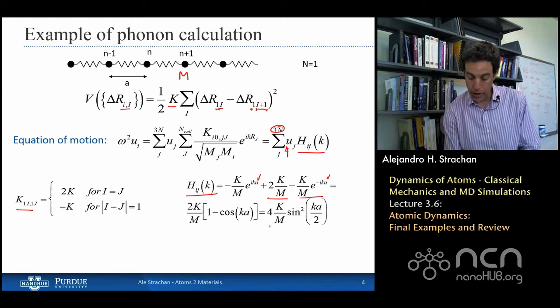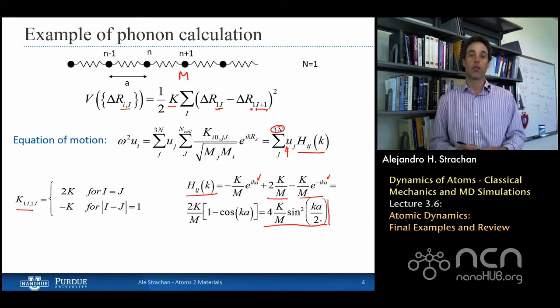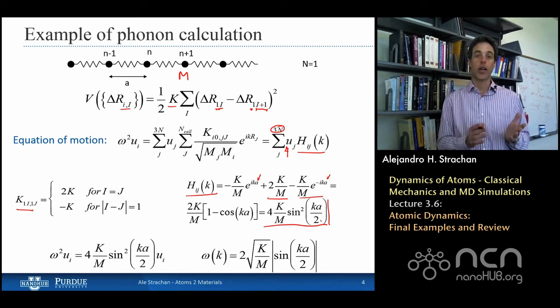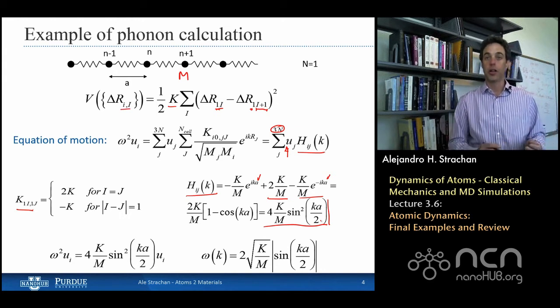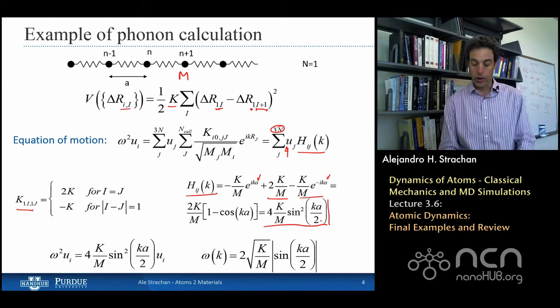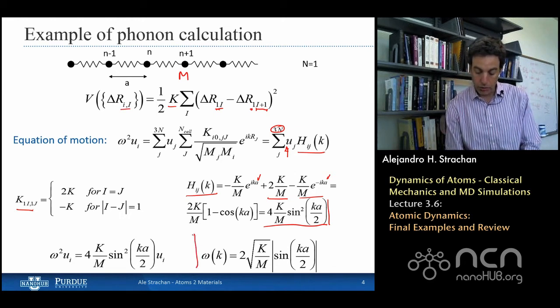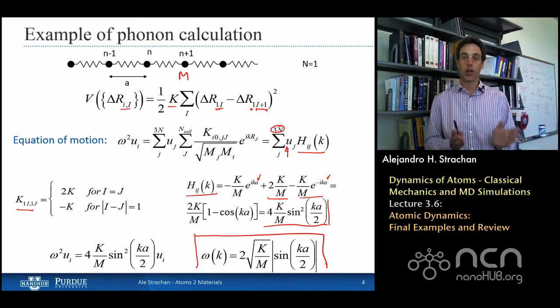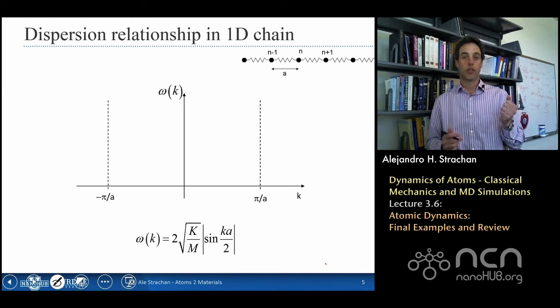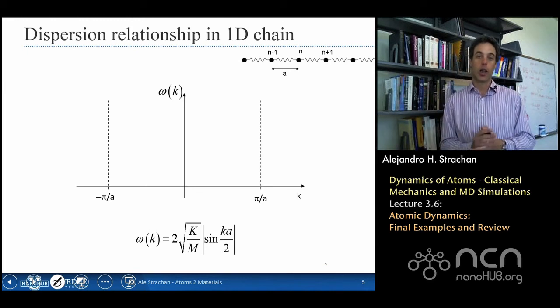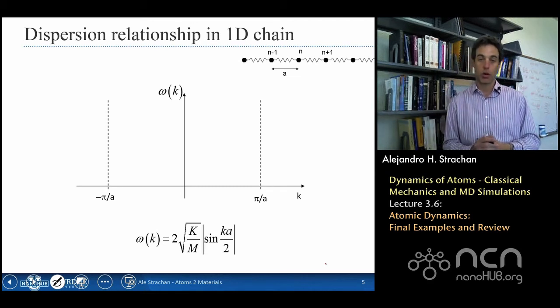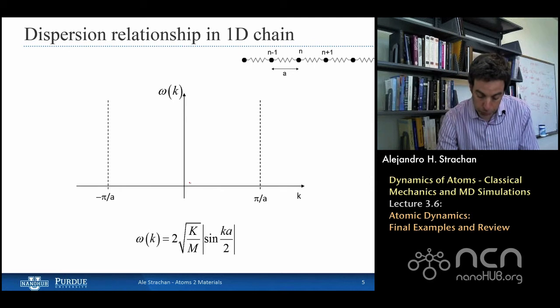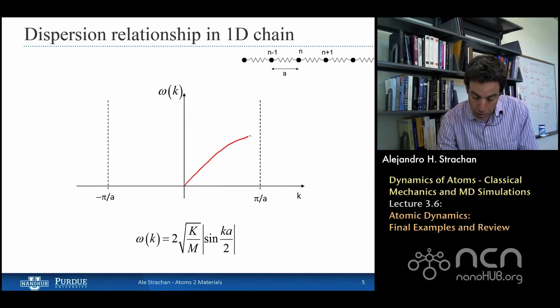After a little bit of algebra, I come to this expression for the dynamical matrix, which then I plug into my equation of motion, and I can get an expression for the frequency, the eigenvalue, as a function of k. You can see here, it's proportional to the absolute value of sine. So this relationship is called the dispersion relationship. It's frequency as a function of k. Remember k is limited to the first Brillouin zone, which in 1D goes from negative pi over A to positive pi over A, and if I plot this curve, I'm going to get a dispersion curve that looks like that.